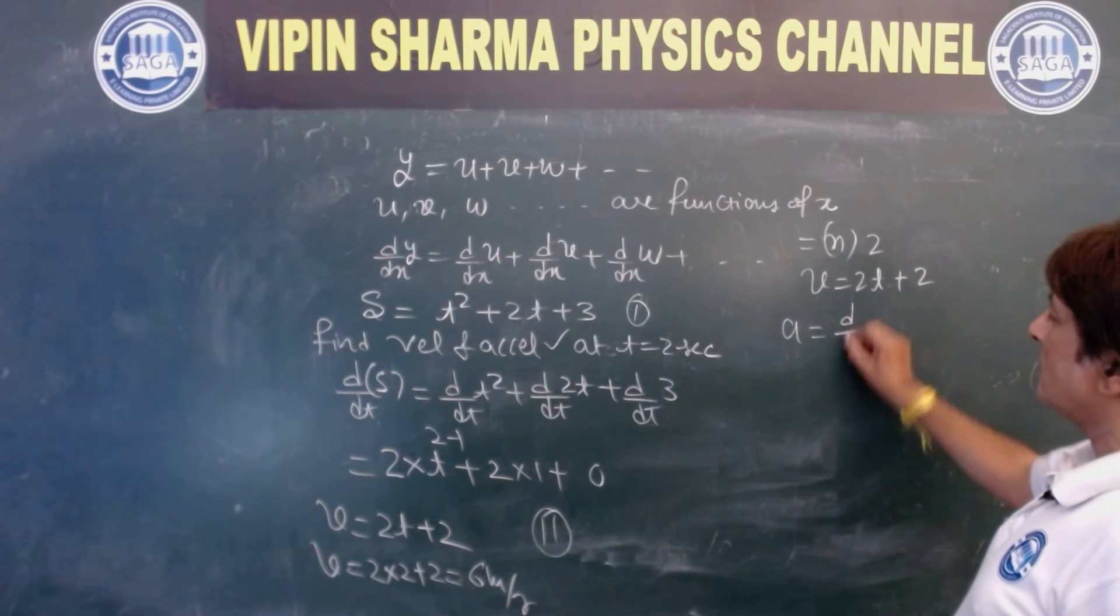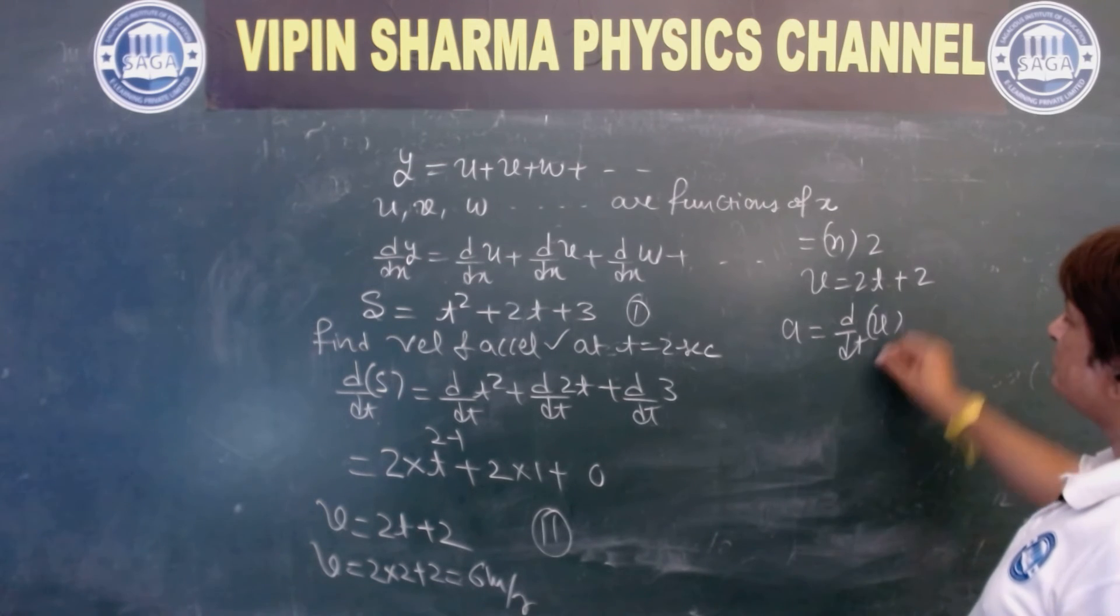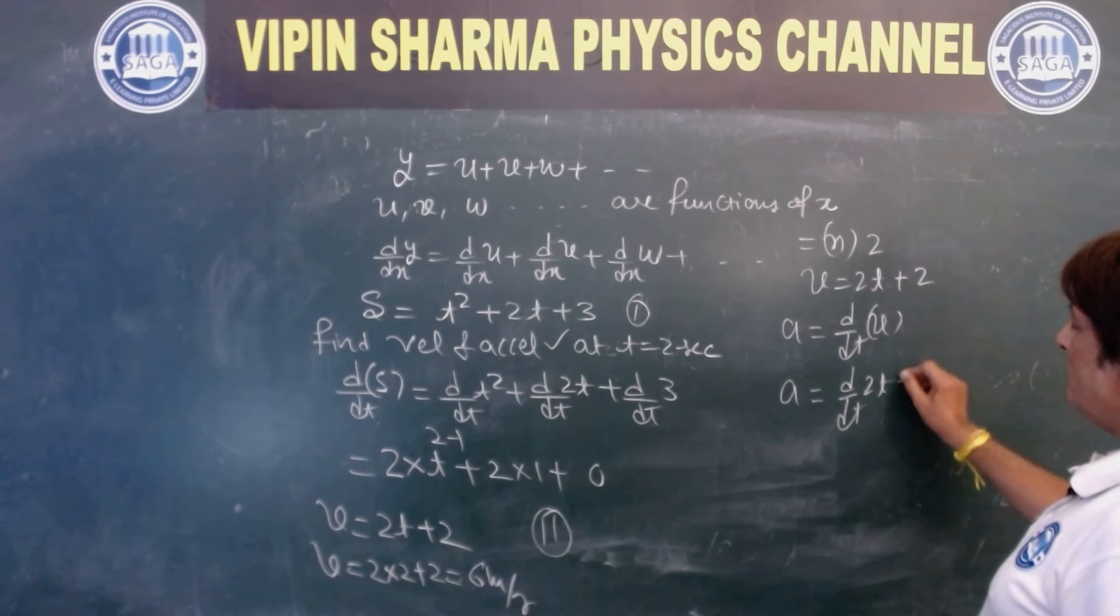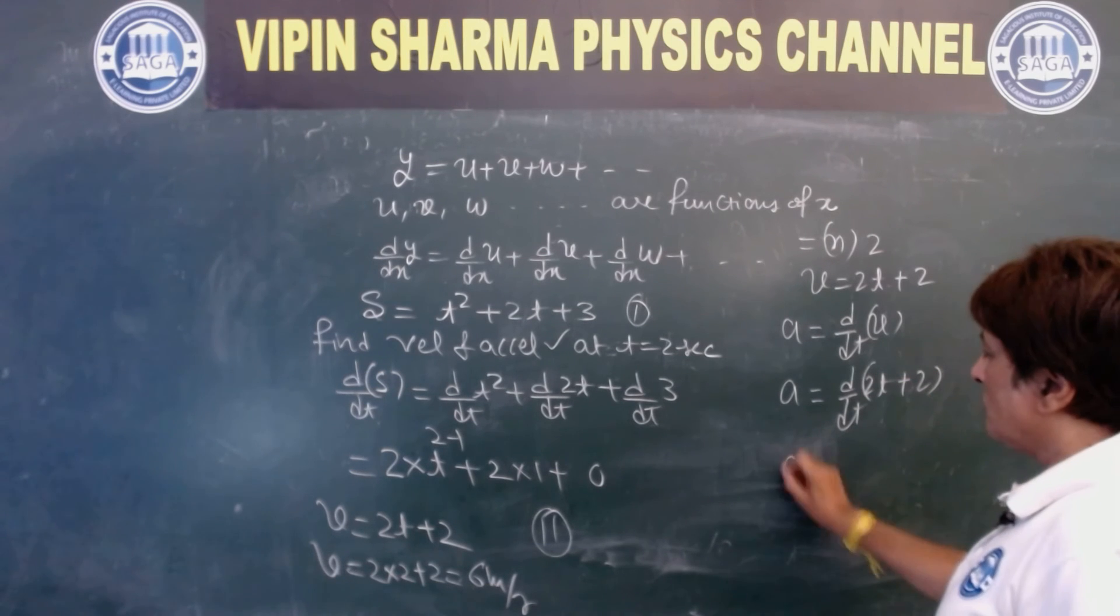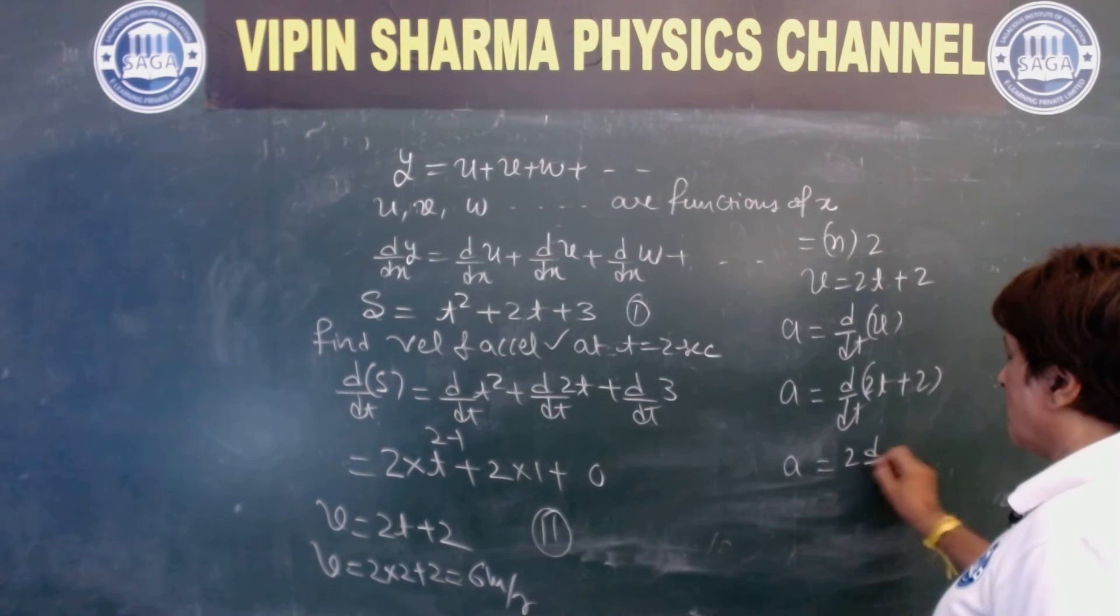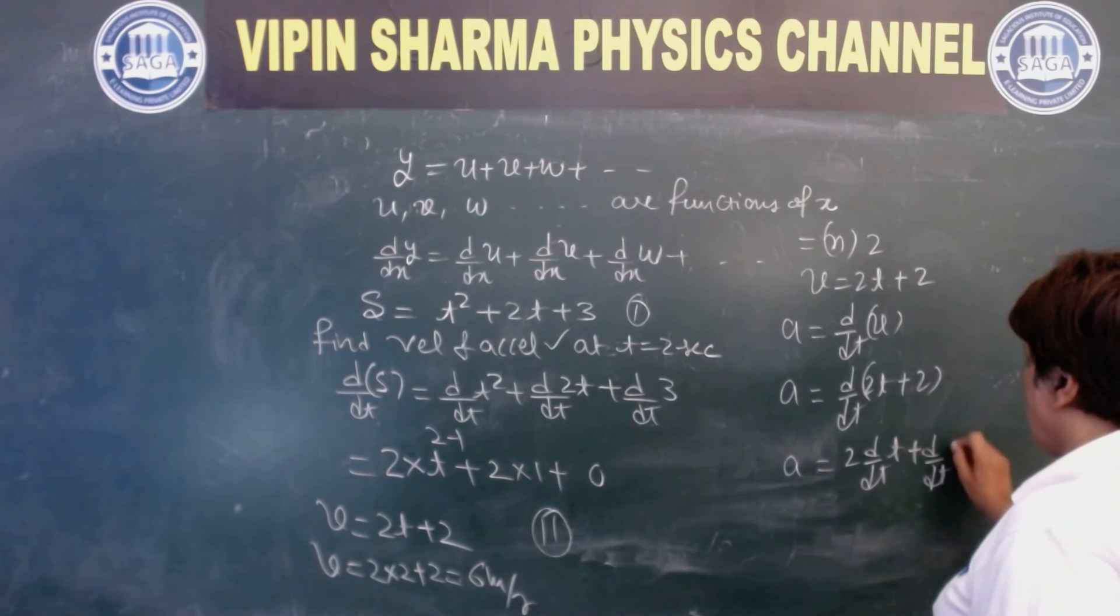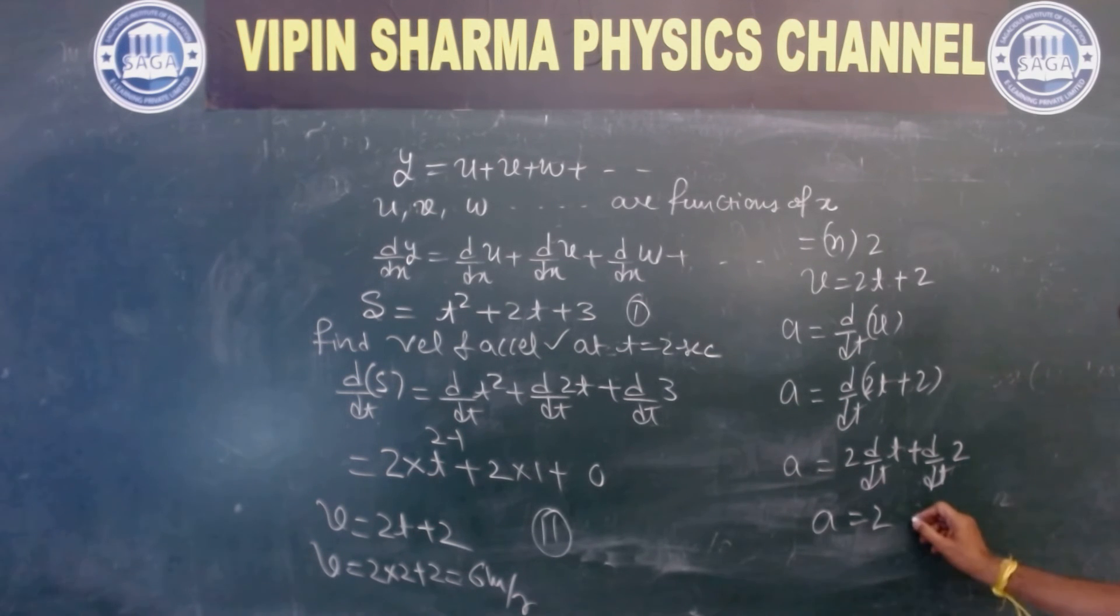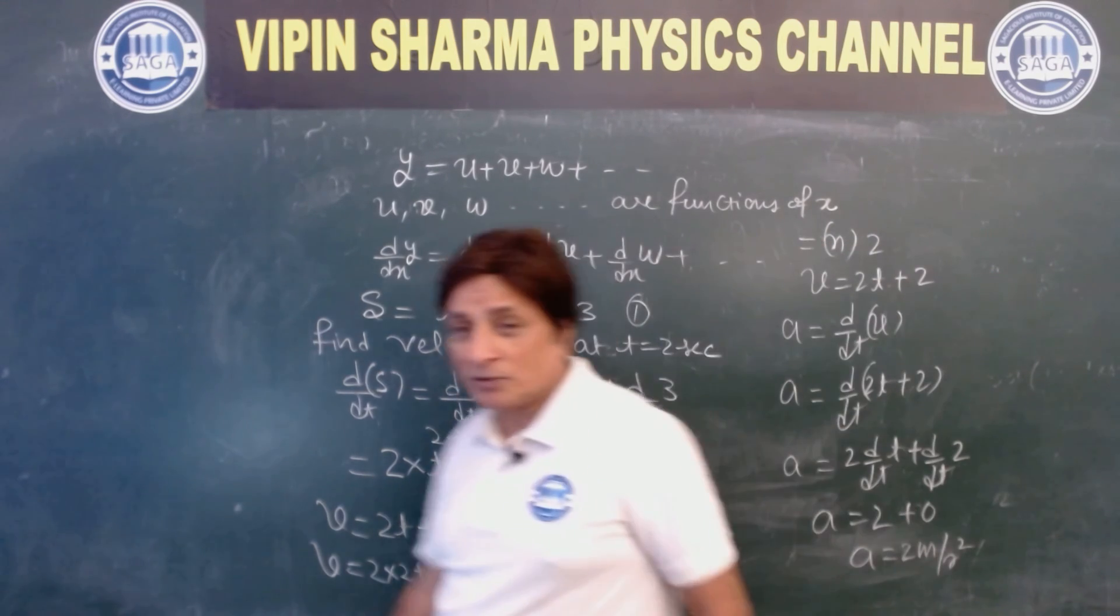This is d/dt of 2t plus 2. So this is 2 times d/dt of t which is 1. d/dt of 2 is 0. So acceleration is 2 meters per second squared.